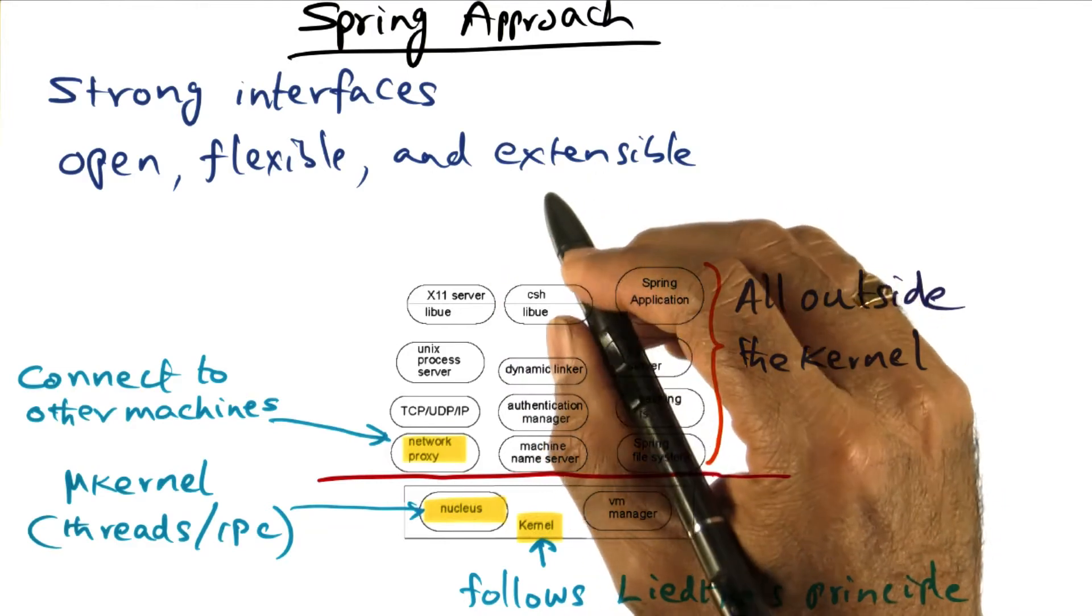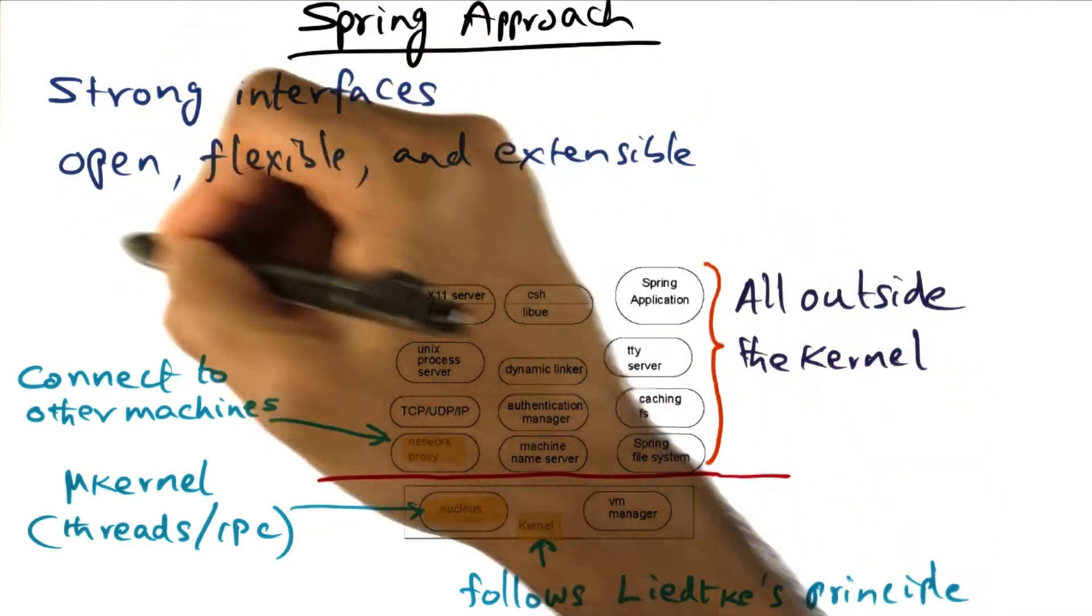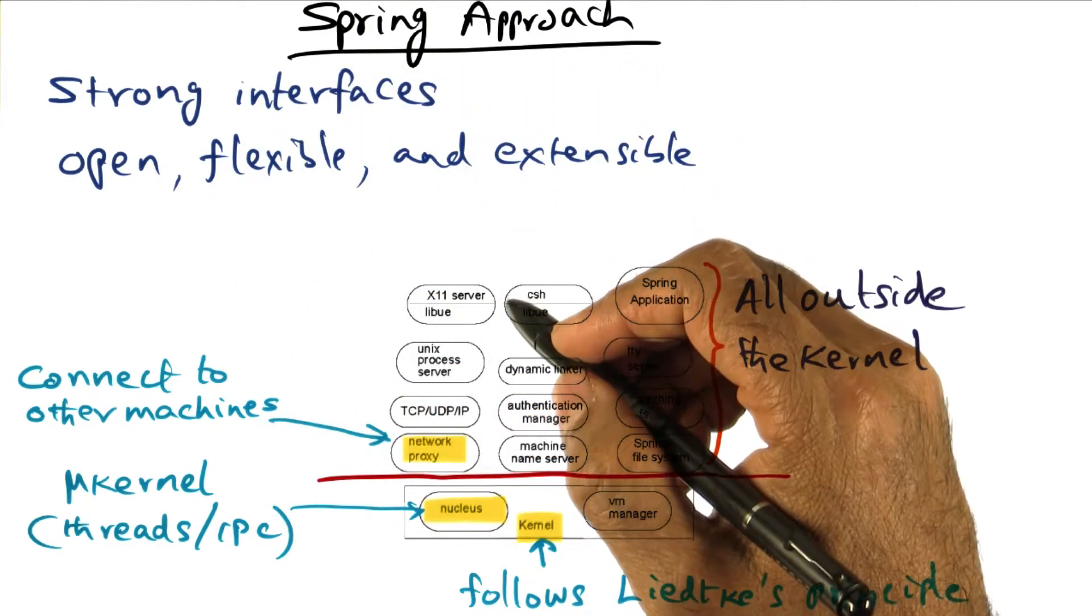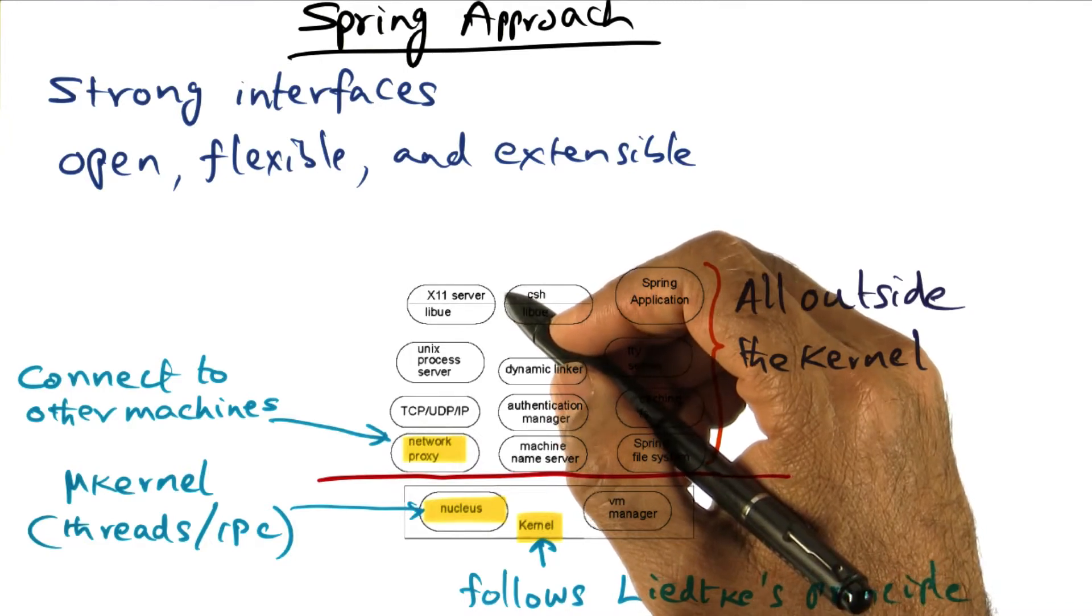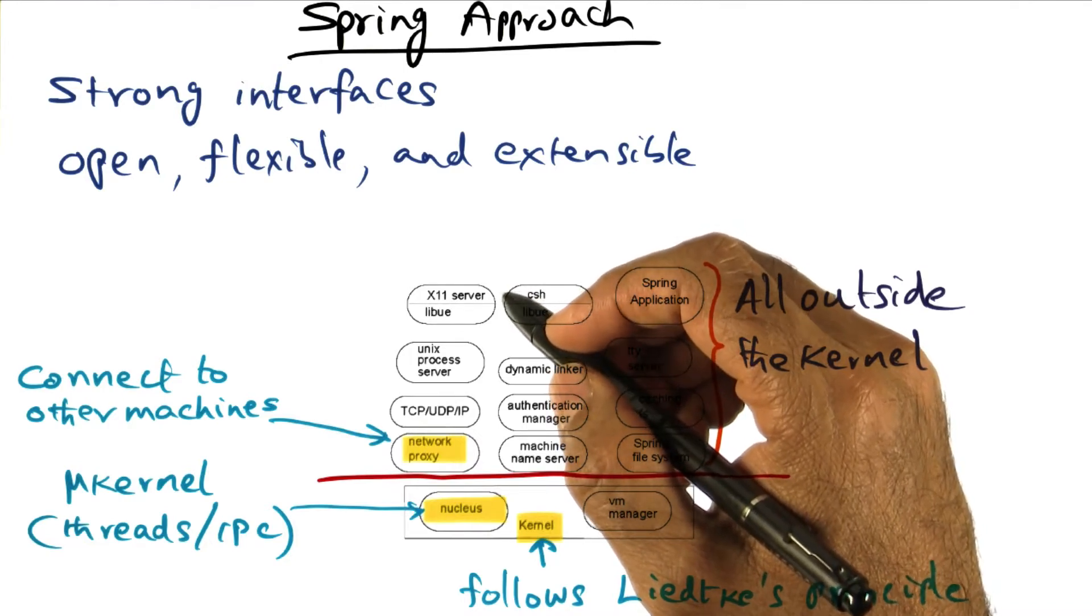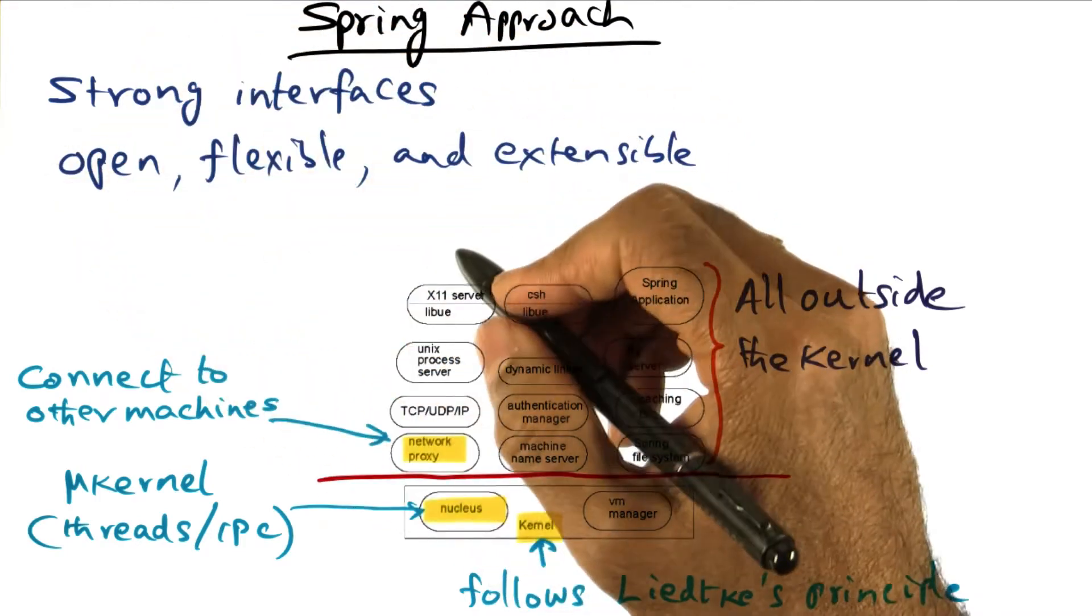And this naturally leads to object orientation. They also wanted to make sure that the system is open and flexible. This is important if you're an operating system vendor and you want to integrate third-party software into your operating system. You want to make sure that your interfaces are open and flexible.